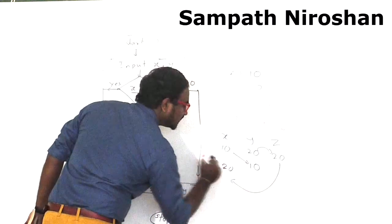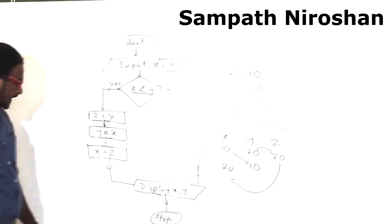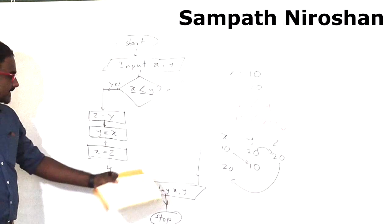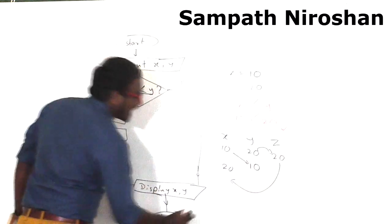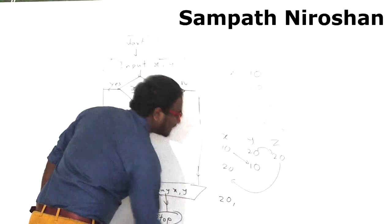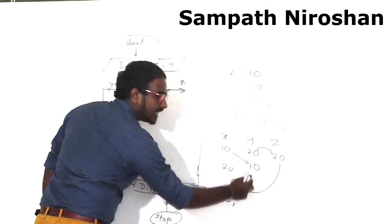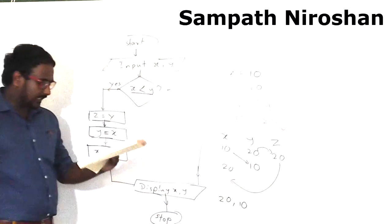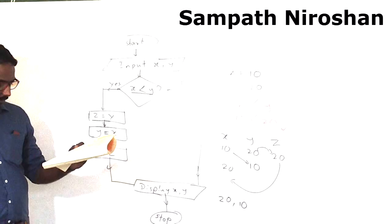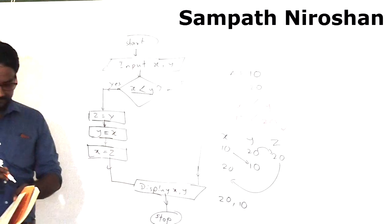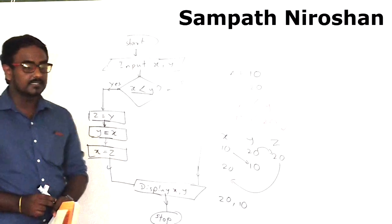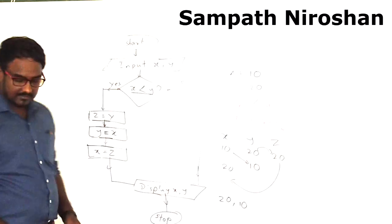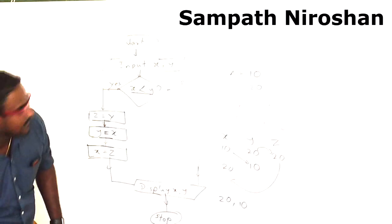Now they are saying display x and y. As x they have to say 20, as y they have to say 10. 20 and 10 in the correct order, third answer. This is the way you are cracking the case.